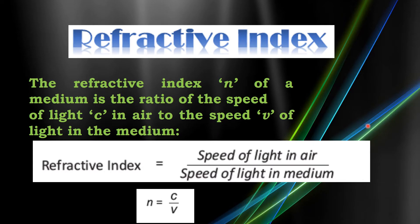The refractive index n of a medium is the ratio of the speed of light c in air to the speed v of light in the medium. We can calculate refractive index as: n equals the speed of light in air divided by the speed of light in the medium.